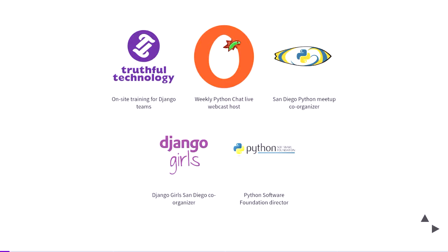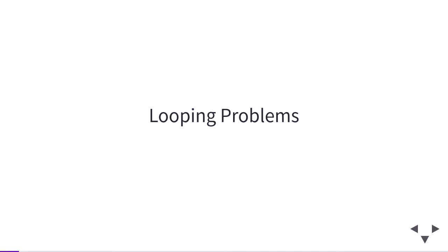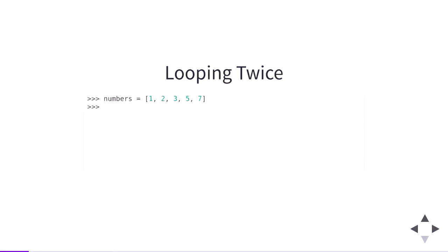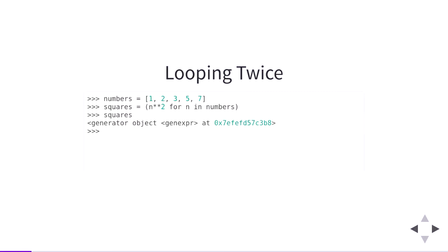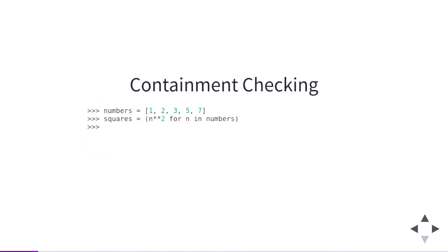All right, so that's a bit about me. Let's talk about looping, specifically looping problems. Every interesting journey starts with a problem. We're going to look at some confusing things to kind of pique our curiosity and motivate us to learn how looping works under the hood in Python. Numbers here is a list. Squares is a generator. This generator will give us squares of each of the numbers in this list. Generators are lazy. We can't do much with squares except loop over it. We could pass it to the tuple constructor to make a tuple, or to the sum function to add up all the squares. You might expect a large number here. We get zero instead. That generator was empty by the time we looped over it a second time.